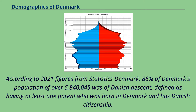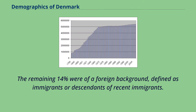Danish descent is defined as having at least one parent who was born in Denmark and holds Danish citizenship. The remaining 14 percent were of a foreign background, defined as immigrants or descendants of recent immigrants.